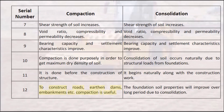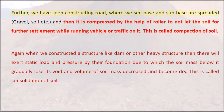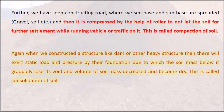12. To construct roads, earthen dams, embankments, etc., compaction is useful. The foundation soil properties will improve over a long period due to consolidation. For example, when constructing a road, the base and sub-base are spread — gravel, soil, etc. — and then compressed by a roller to prevent further settlement. This is called compaction of soil. When a heavy structure like a dam is constructed, it exerts static load and pressure through its foundation, causing the soil mass below to gradually lose its voids, decrease in volume, and become denser. This is called consolidation of soil.